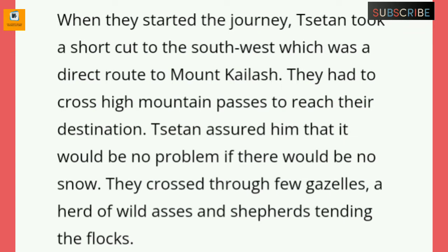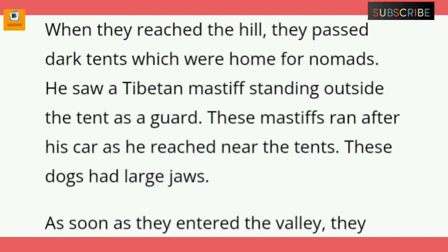When they started the journey, Tsetan took a shortcut to the southwest, which was a direct route to Mount Kailash. They had to cross high mountain passes to reach their destination. Tsetan assured him there would be no problem if there was no snow. They crossed through a few gazelles, a herd of wild asses, and shepherds tending their flocks. When they reached the hill, they passed dark tents which were home to nomads. He saw a Tibetan mastiff standing outside the tent, and these mastiffs ran after his car as he reached near the tents.